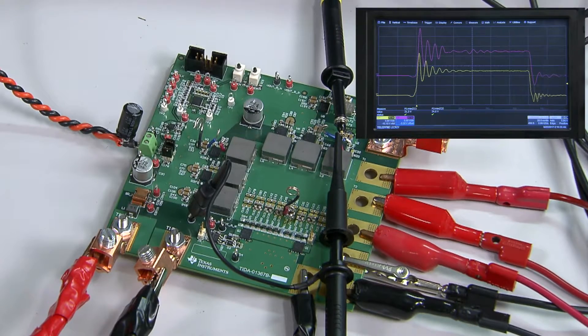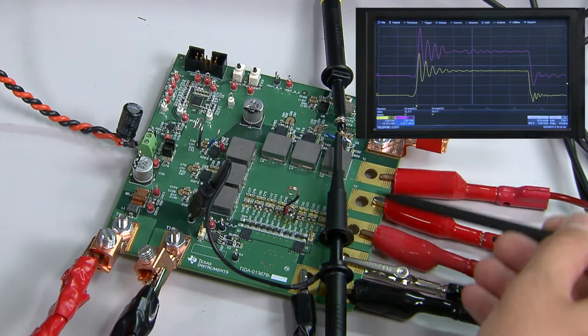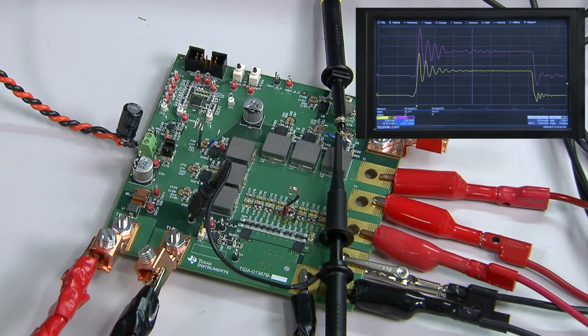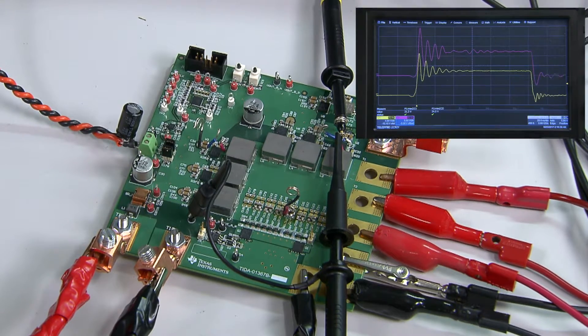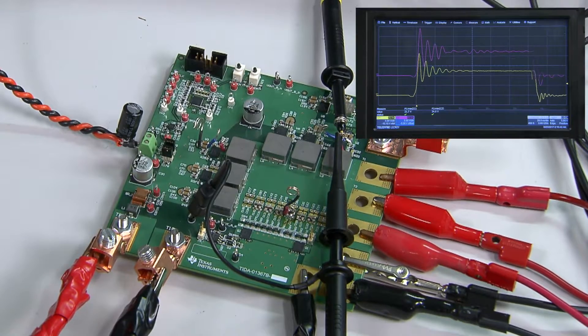I'm pulling our DC current of 100 amps right now. The ringing we're seeing is within the data sheet limits for the power stage, but if there are EMI concerns in a real application I would throw on a snubber or a boot resistor.